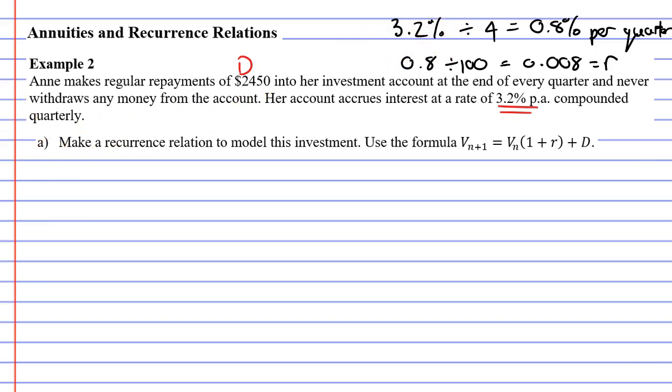Looking at question A, it says make a recurrence relation to model this investment. And when we talk about a recurrence relation, we're talking about this formula over here. It's even telling us to use this formula. So we'll start by copying the formula down. V(n+1) equals V(n). And we're going to substitute a couple of values here. We know what R is. R is 0.008. And D is our repayment, $2,450.